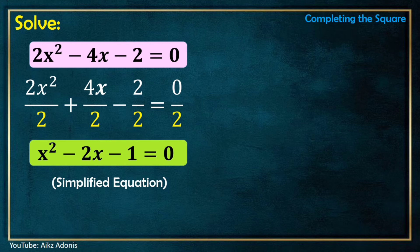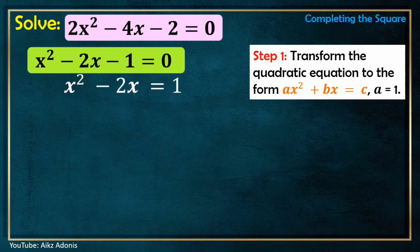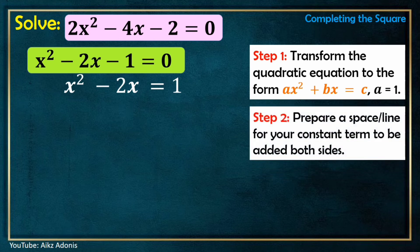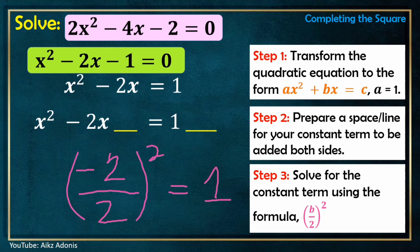Now let's solve the simplified equation x² - 2x - 1 = 0. Step 1: Transpose -1 to the right so it becomes positive 1, giving x² - 2x = 1. Step 2: Prepare a space for the constant term to be added to both sides. Step 3: Solve for the constant term using (b/2)². Here b = -2, so -2 ÷ 2 = -1, and (-1)² = 1. The constant term is positive 1.